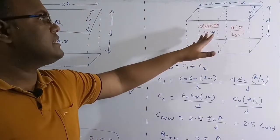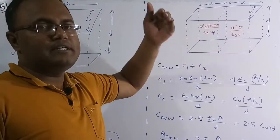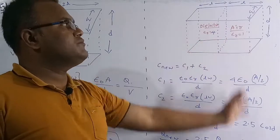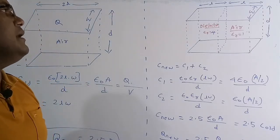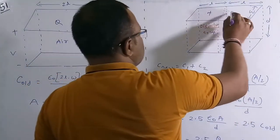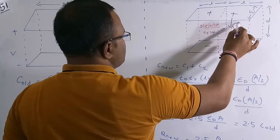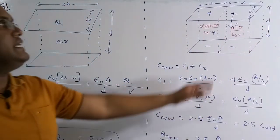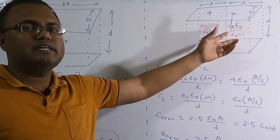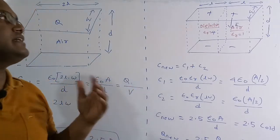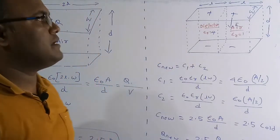If we insert a dielectric slab of length L/2 — half of the original length — with epsilon_r equals 4, we need to find the net charge and voltage across the plates. The upper plate is positive and the lower plate is negative. The electric field is parallel to the dielectric interface between the two dielectrics.